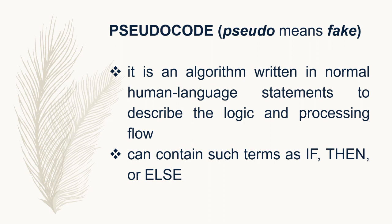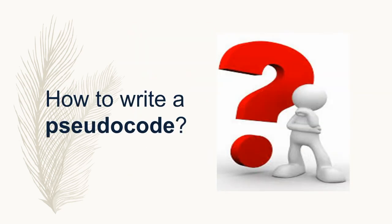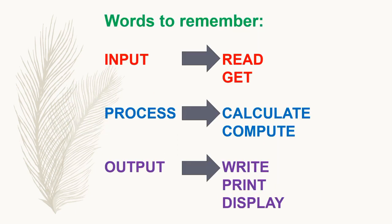Pseudo code is an algorithm written in normal human language statements to describe the logic and processing flow. It contains terms such as if, then, or else. When writing a pseudo code, there are keywords to remember: for input, we can use the word 'read' or 'get'; for process, we can use 'calculate' or 'compute'; and for output, we can use 'write', 'print', or 'display'.